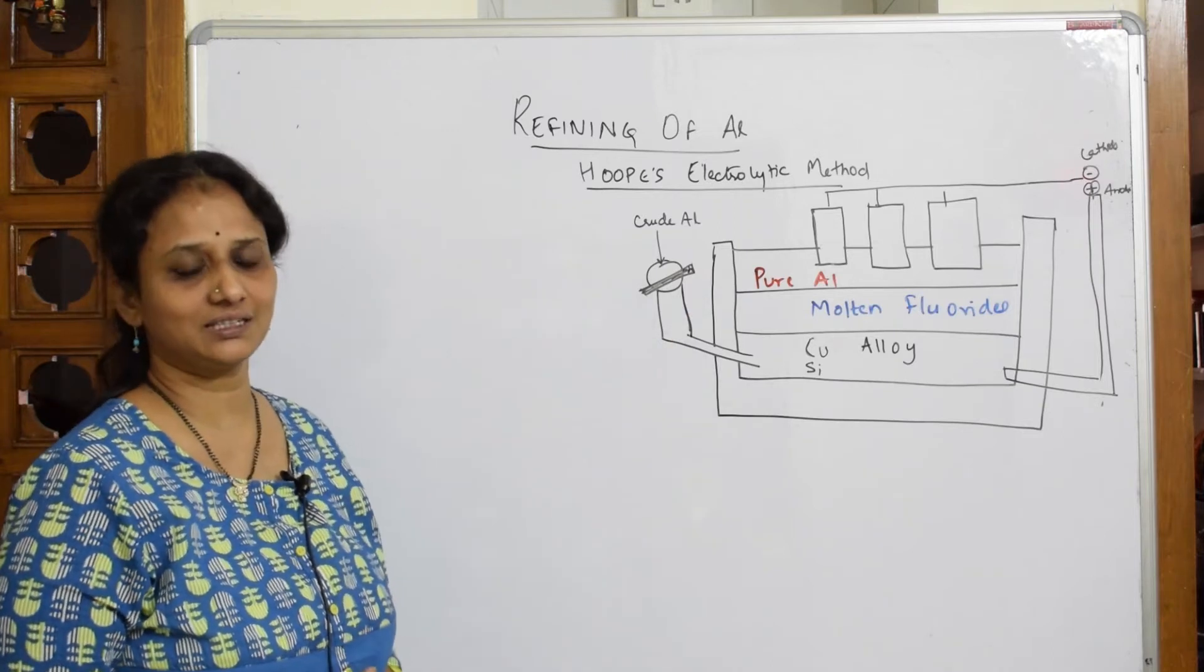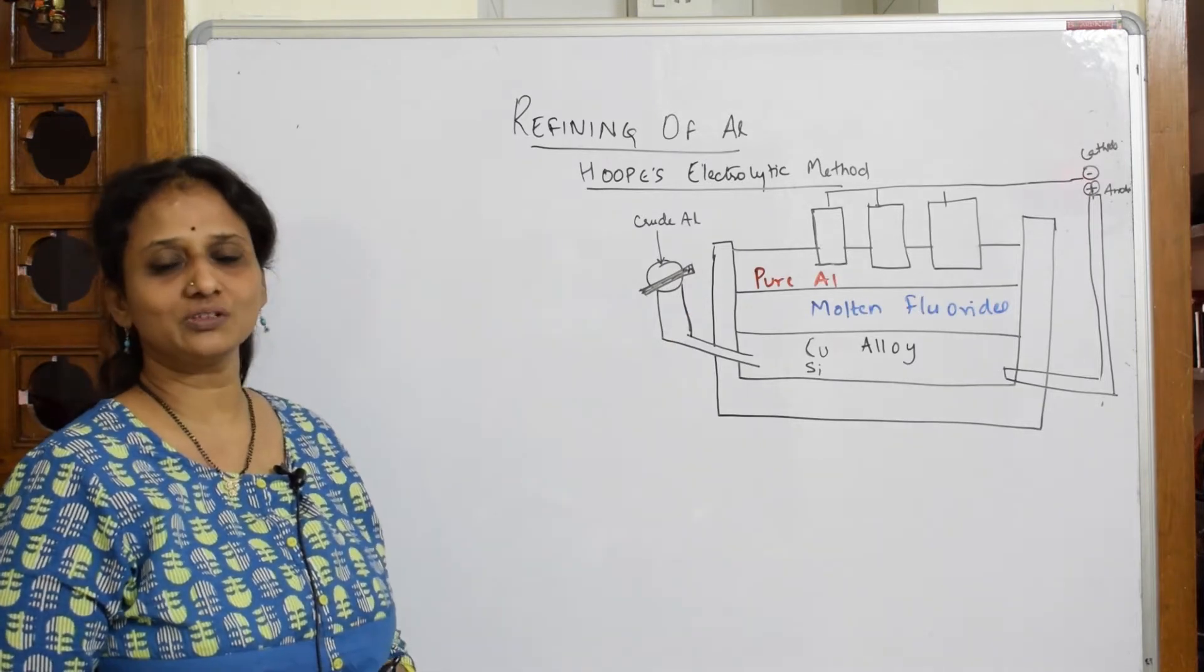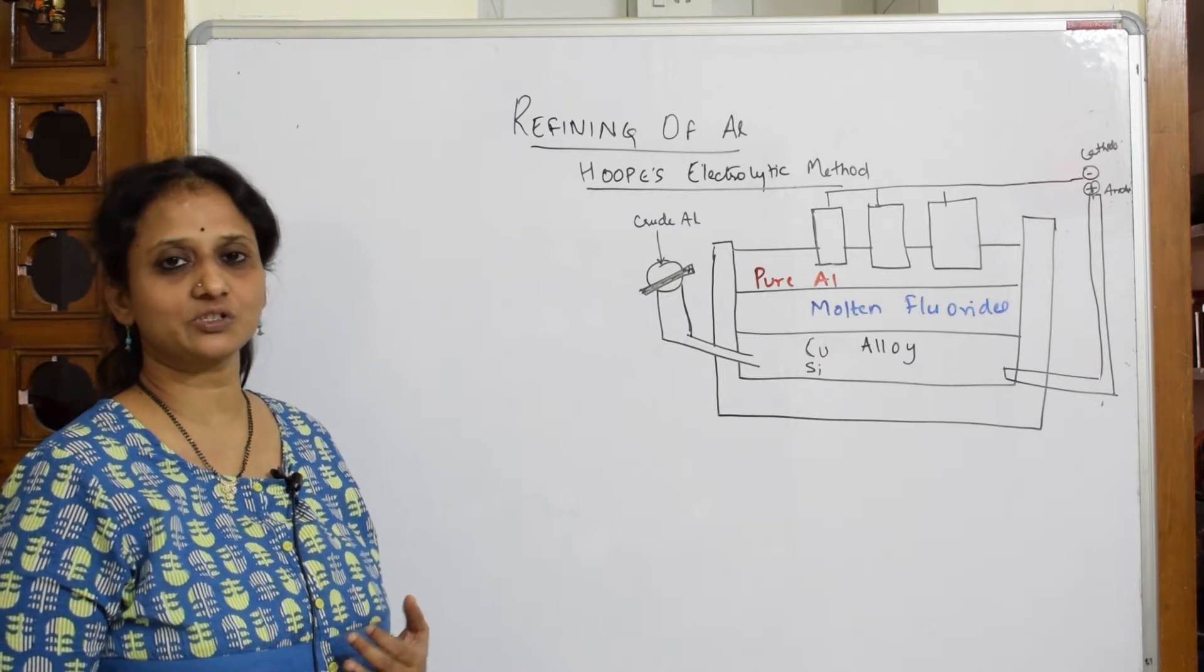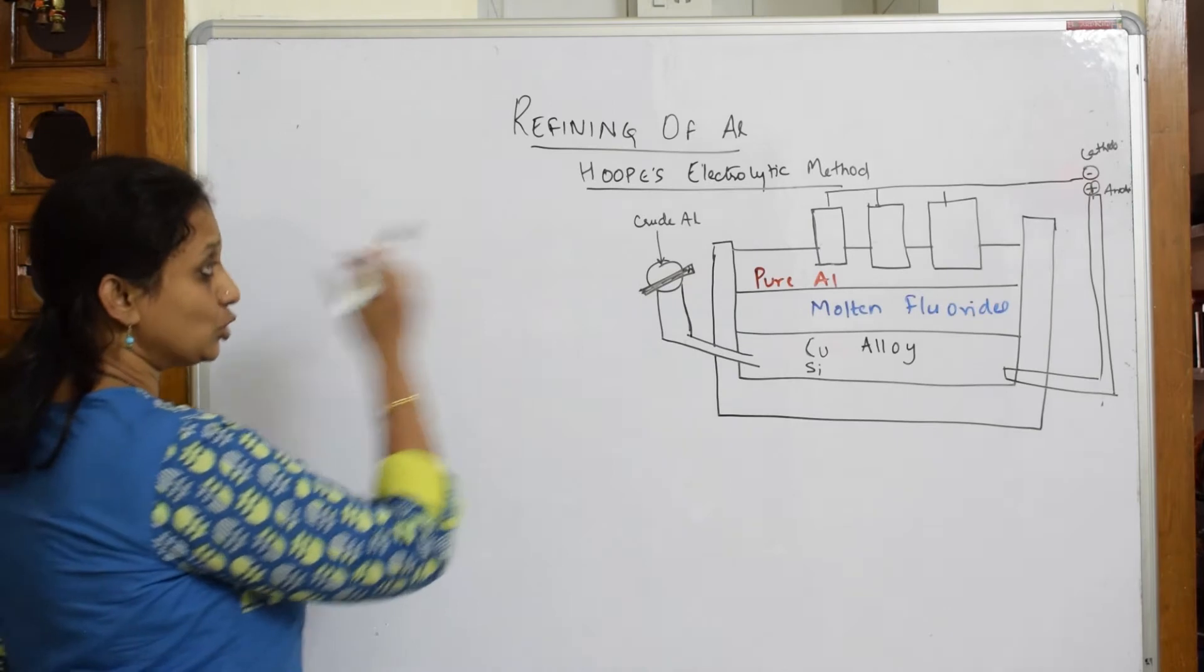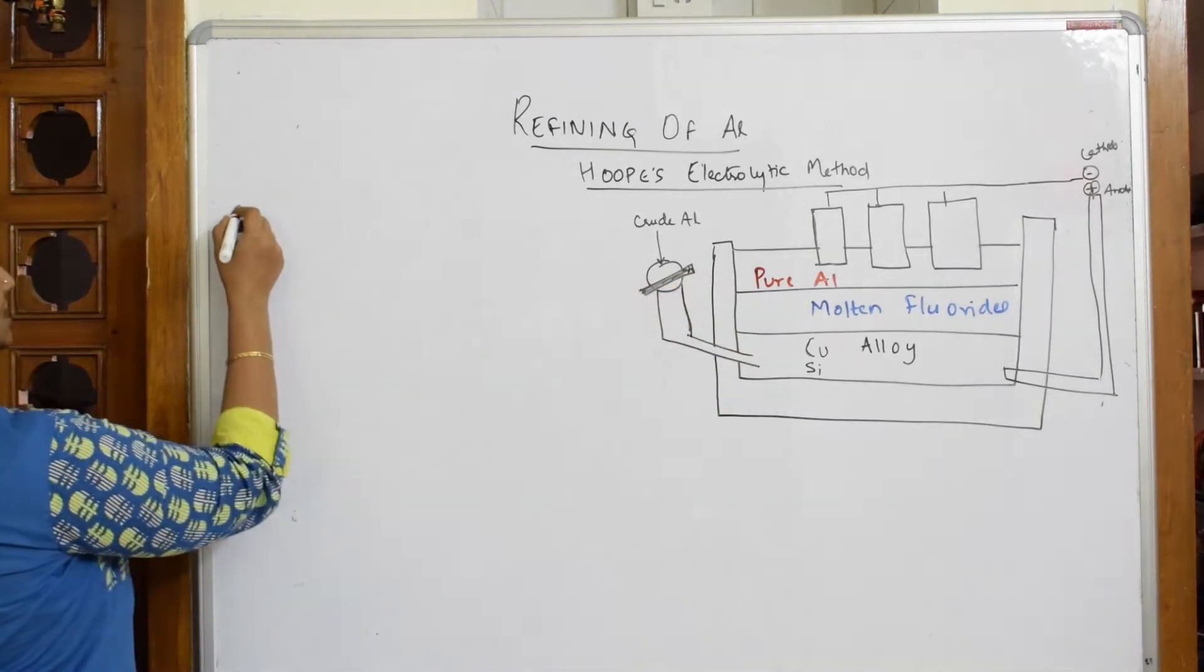When we observe the electrolytic cell, we always know that it should have a cathode. The electrolytic cell is composed of a cathode, anode, and an electrolyte. That's important. Now in Hoopes electrolytic method, we are going to see what is acting as an anode, what is the electrolyte, and what is acting as a cathode.